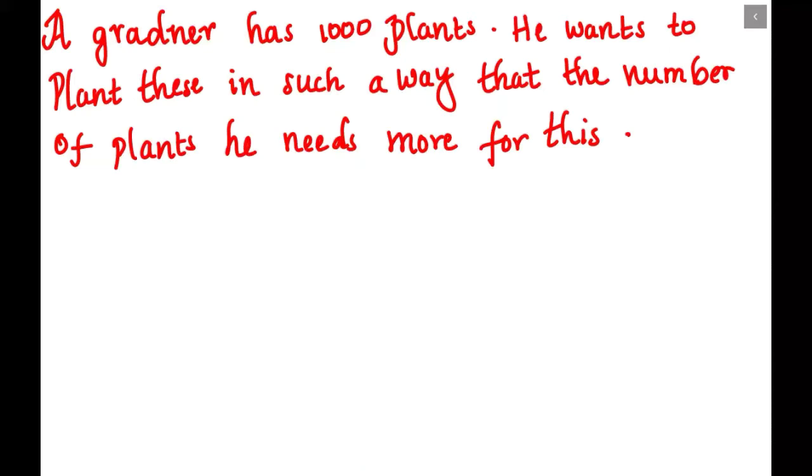So there are a thousand plants and the gardener wants extra plants because he wants to make the rows and columns of the plants equal. So for this we have to solve the problem.